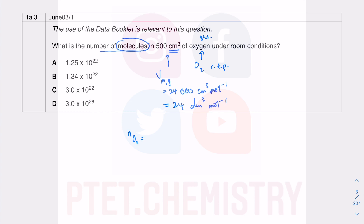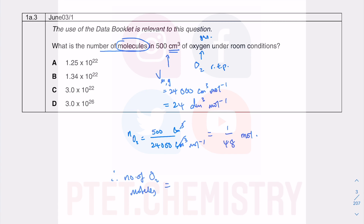The moles of oxygen = 500 cm³ ÷ 24,000 cm³/mol. The cm³ units cancel, leaving moles. I'll keep it as an exact fraction: 500/24,000 = 1/48 mol. The number of O₂ molecules = Avogadro's constant × moles of oxygen.